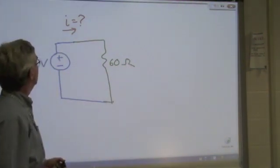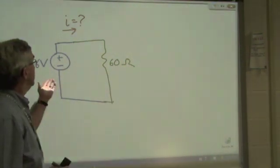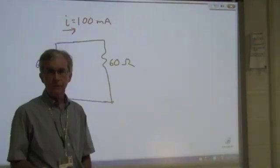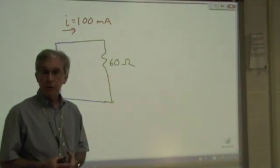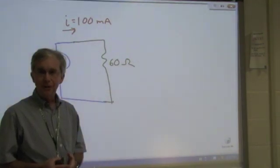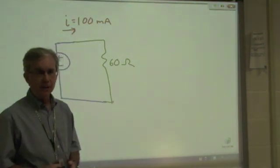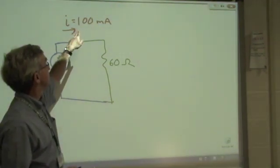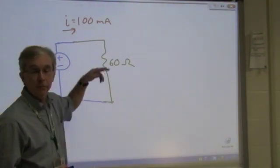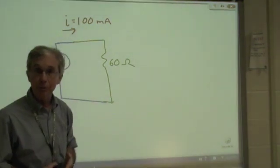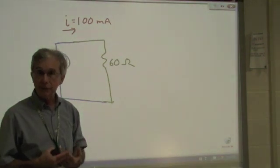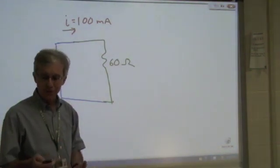And I can use Ohm's law to say that the current, 6 volts divided by 60 ohms, is now equal to 100 milliamps. And if we watched our earlier video lesson on connection constraints, we used KCL, KVL, and element constraints to solve for I equal to 100 milliamps with our 8 equations and 8 unknowns approach.